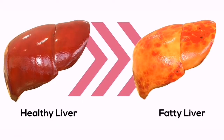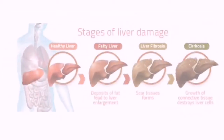What are the five main functions of the liver? The primary functions of the liver are: bile production and excretion, excretion of bilirubin, cholesterol, hormones, and drugs, and metabolism of fats, proteins, and carbohydrates.